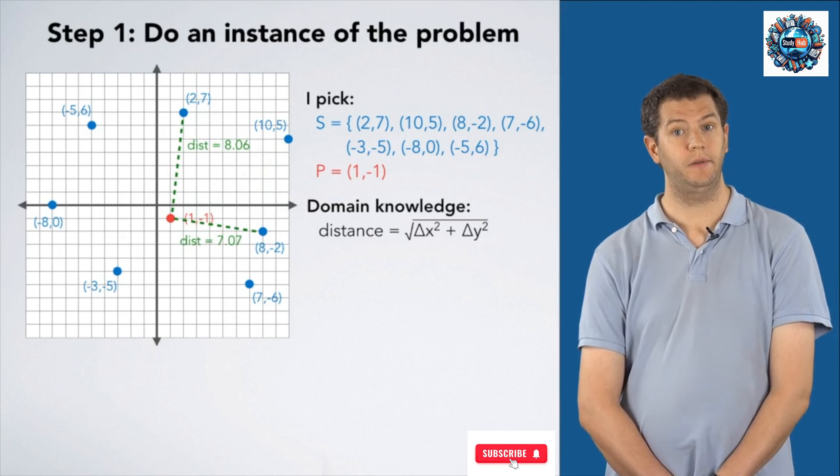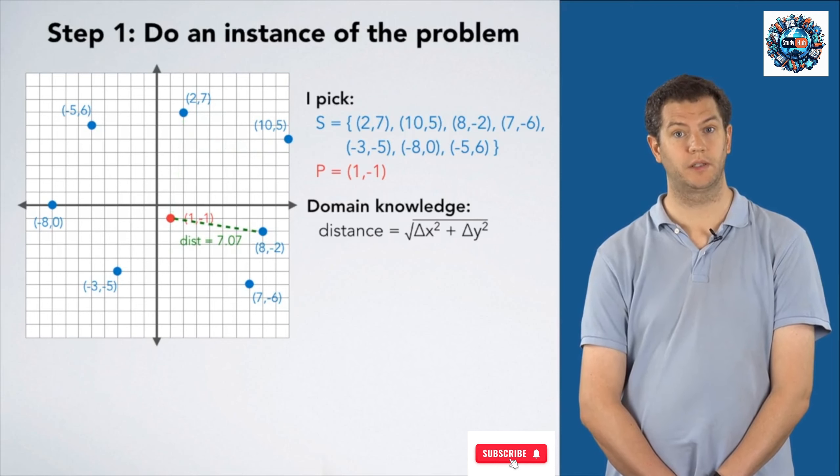This point is 7.07 away, so I'm going to keep the new closest point so far. This point is 7.81 away, so (8,2) is still closer. This point is 5.66 away, so we have a new closest point.